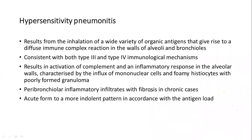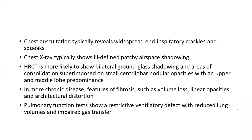Hypersensitivity pneumonitis results from inhalation of a wide variety of organic antigens, giving rise to a diffuse immune complex reaction in the walls of alveoli and bronchioles. It involves both type 3 and type 4 immunological mechanisms. Exposure activates complement and an inflammatory response in alveolar walls, characterized by influx of mononuclear cells and foamy histiocytes with poorly formed granulomas, leading to peribronchial inflammation. In chronic cases, fibrosis may develop. On chest auscultation, widespread inspiratory crackles and squeaks are found. Chest X-ray typically shows ill-defined patchy airspace shadowing.